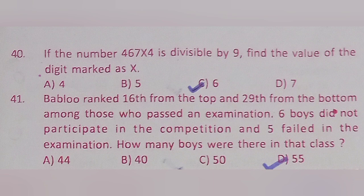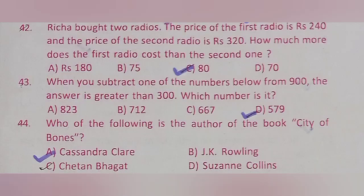Question 41: Bobbler ranked 16th from the top and 29th from the bottom among those who passed an examination. Six boys did not participate in the competition and five failed. How many boys were there in that class? Option A: 44, Option B: 40, Option C: 50, Option D: 55. The correct answer is Option D: 55.